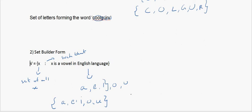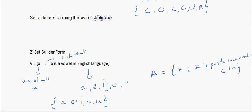A similar example: let set A = {x : x is a positive even number less than 10}. Substituting values of x — positive even numbers less than 10 — gives us 2, 4, 6, 8. Since the condition says less than 10, we do not include 10. This gives us the roster representation {2, 4, 6, 8} from the set builder form.